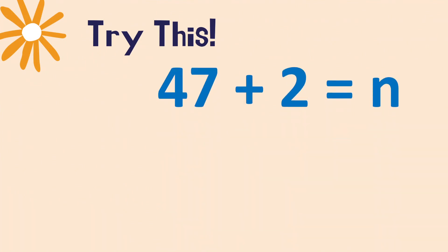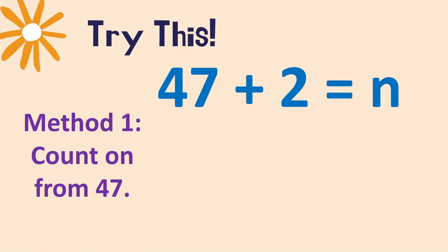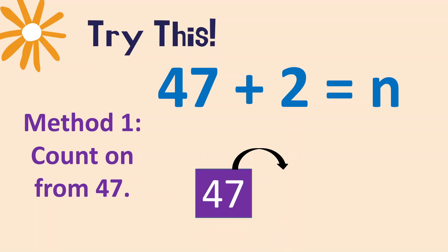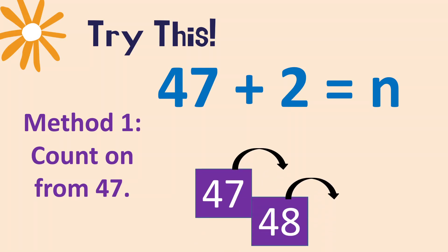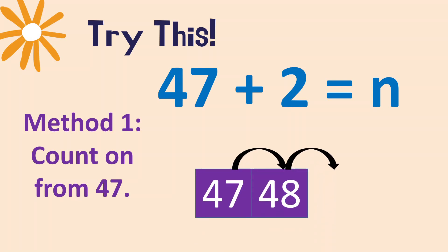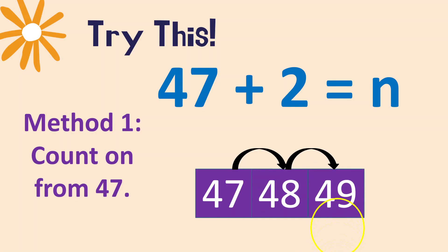So 47 plus 2 equals what? What's your answer? Let's use counting on first — we count on from 47. Start from 47, add two: 48, one more, 49. Very good, so 49 is the answer.